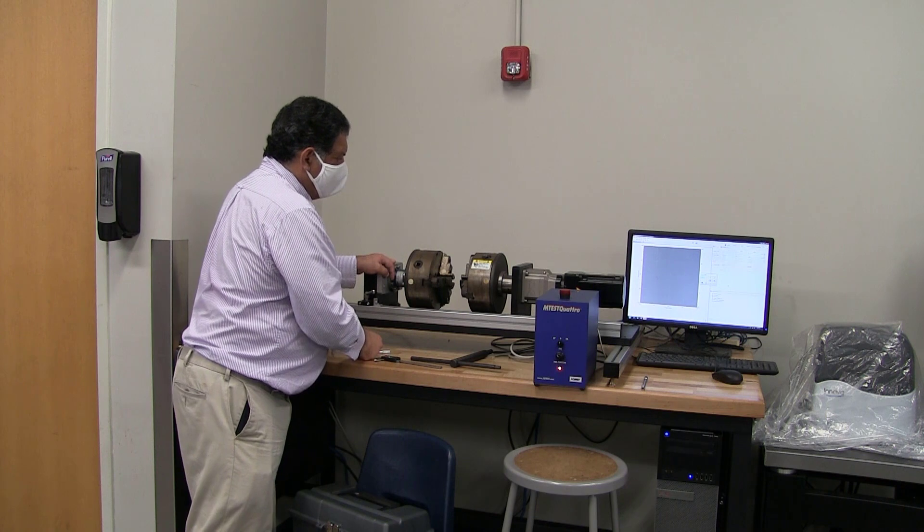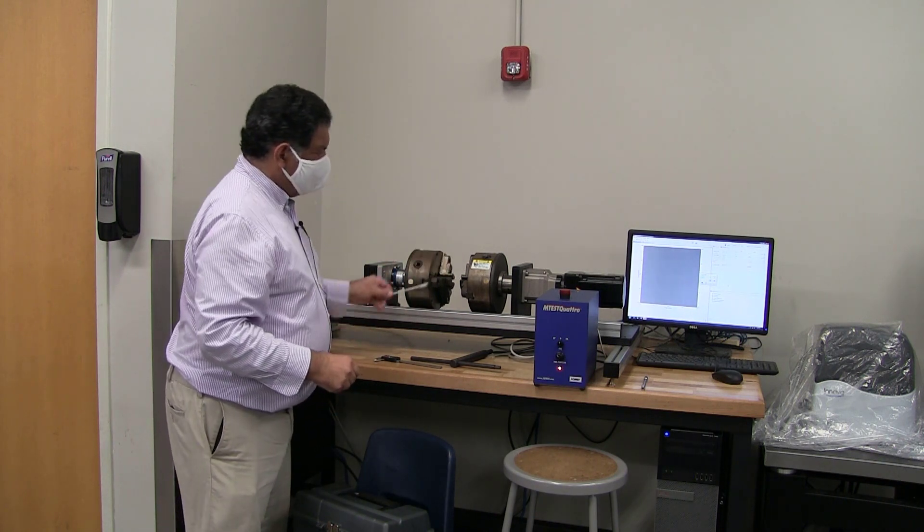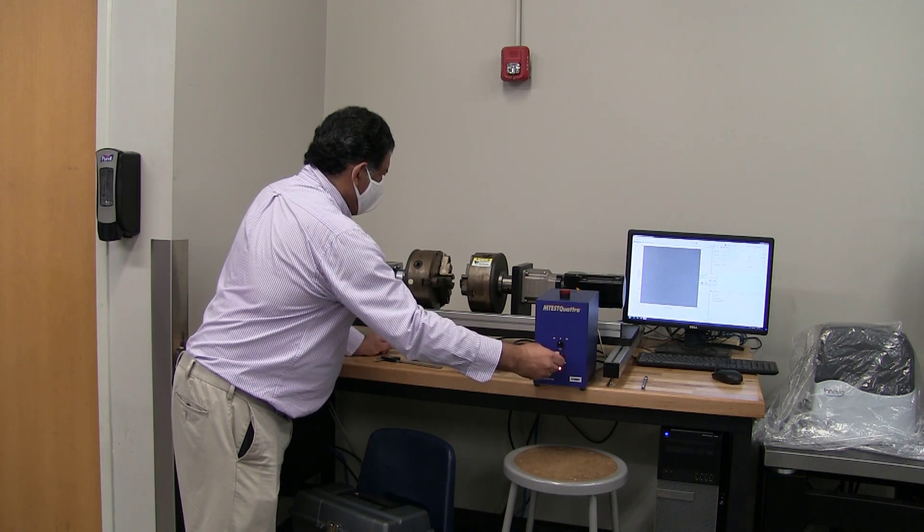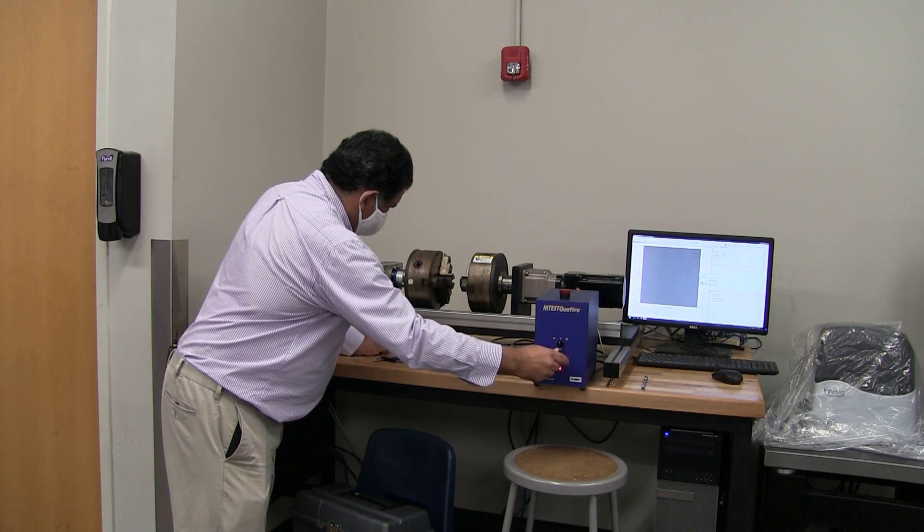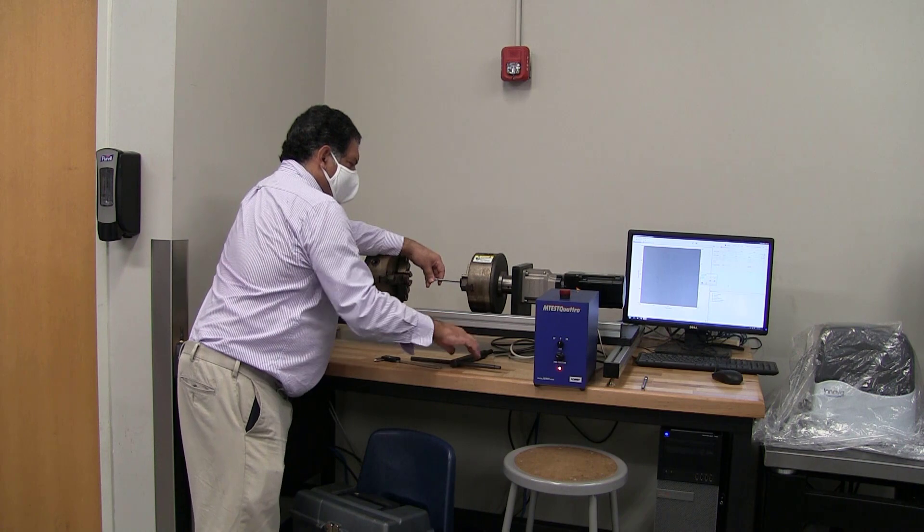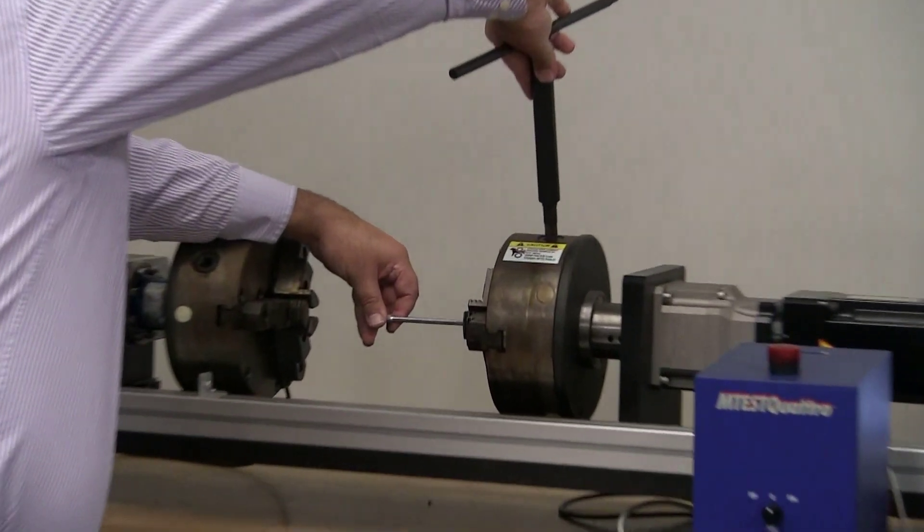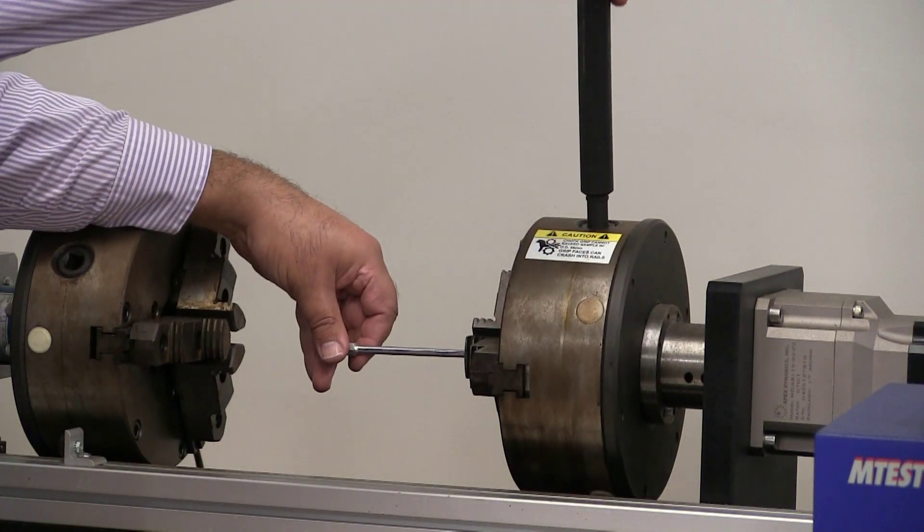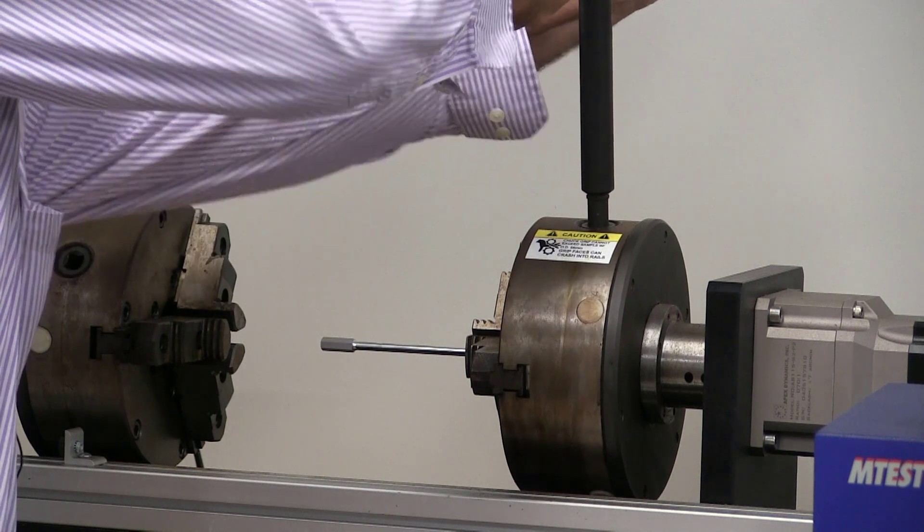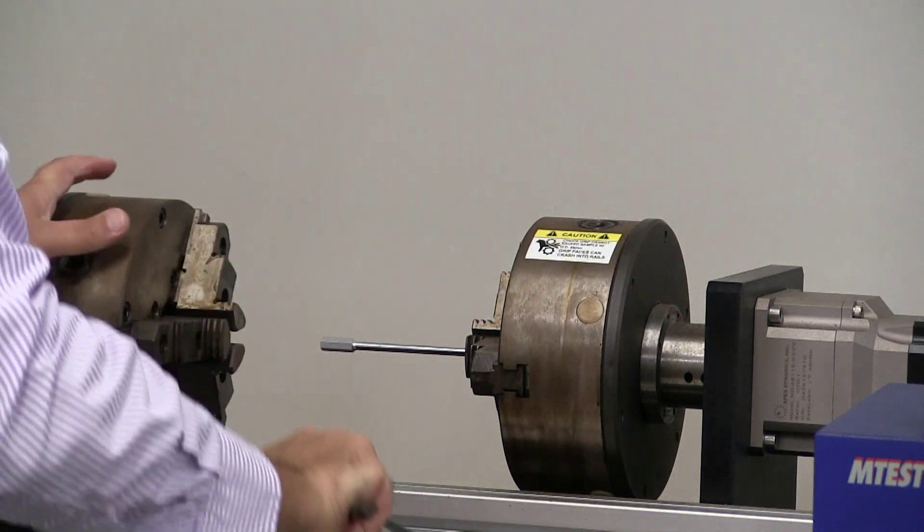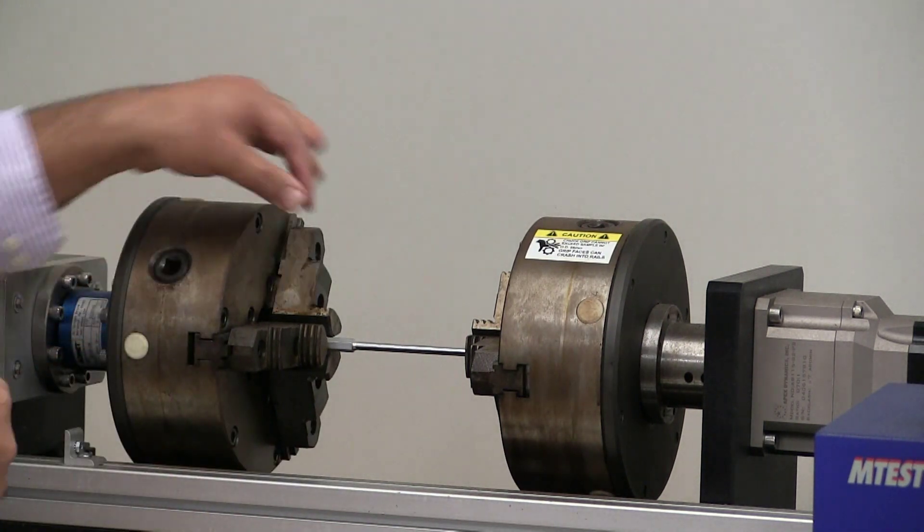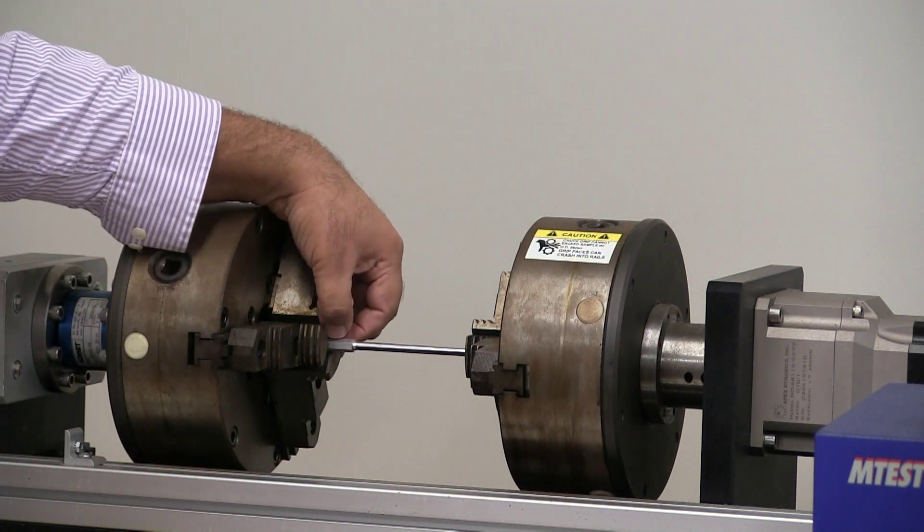First, I'm going to align the jaws so that they're gripping the same hex faces. The eyeball alignment is good enough. I'm going to move this back. Then I'm going to tighten these jaws using the clamp here. Now, I'll slide this forward. As I'm sliding it forward, I'm going to do a more careful job of aligning the facets to the sides of the jaw.